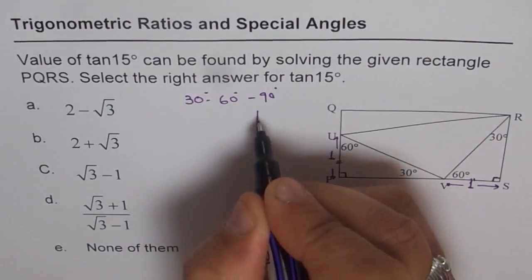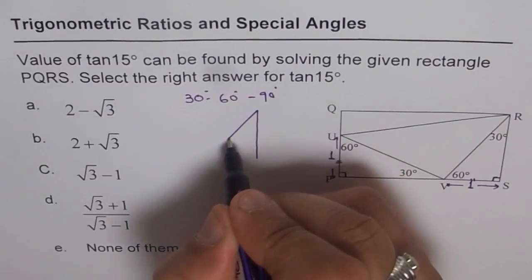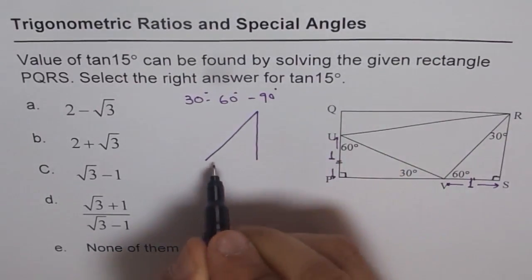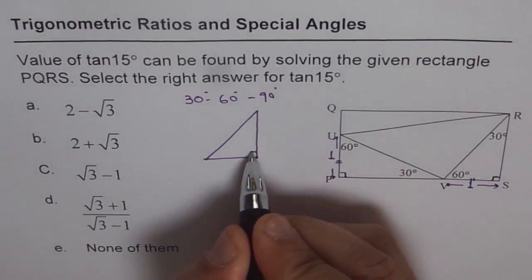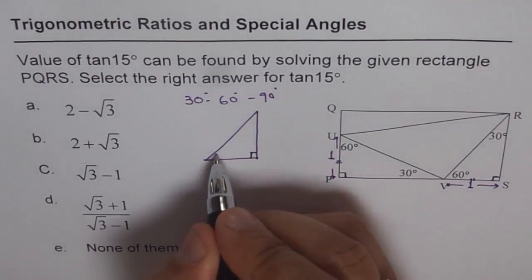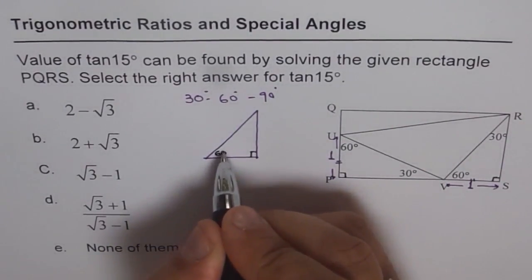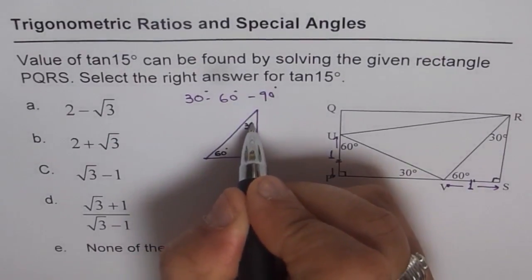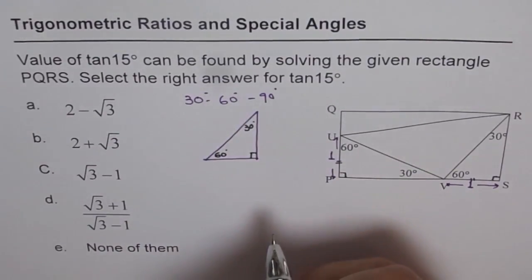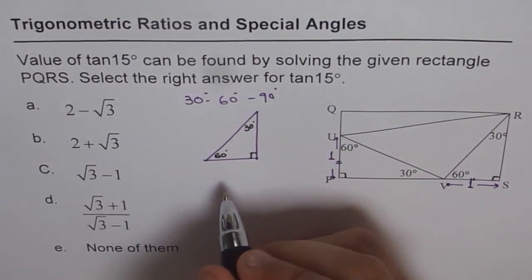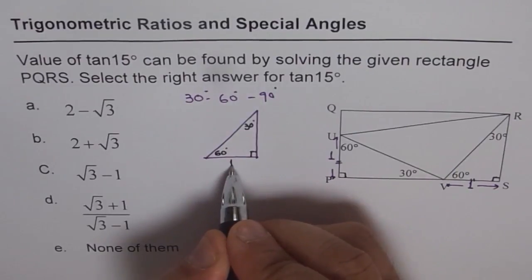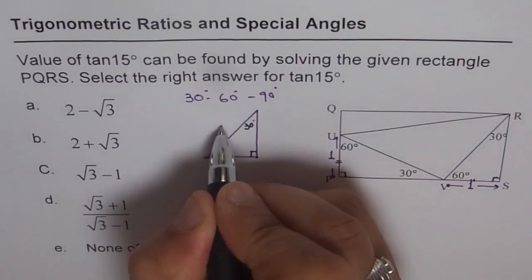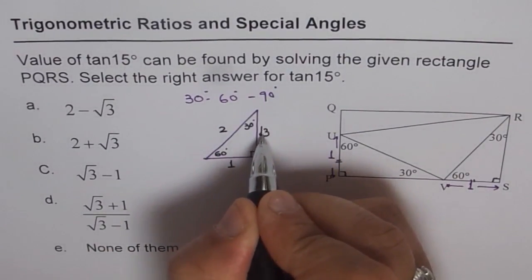In that triangle, we will work with similar triangles. Let's say this is our triangle with 30, 60, 90 — so that is 90 degrees, this is 60 degrees, and 30 degrees. As you know, the sides are in the ratio of 1 to 2 to square root of 3.